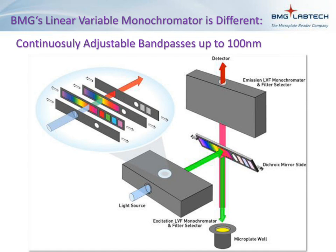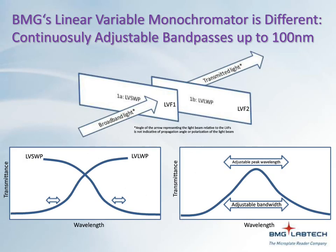By contrast, the LVF monochromator allows for adjustable bandpasses between 8 and 100 nanometers. This diagram of the inner workings of the ClarioStar gives you an idea of how wavelength selection can be performed in both the excitation and emission sides, where linear variable filter slides are moved to select the wavelength and bandpass of your choice. As light passes through the instrument, it passes through successive linear variable filters — one is a short wavelength pass filter, and the other is a long wavelength pass filter — which essentially select the trailing and leading edge of light being used by the instrument.